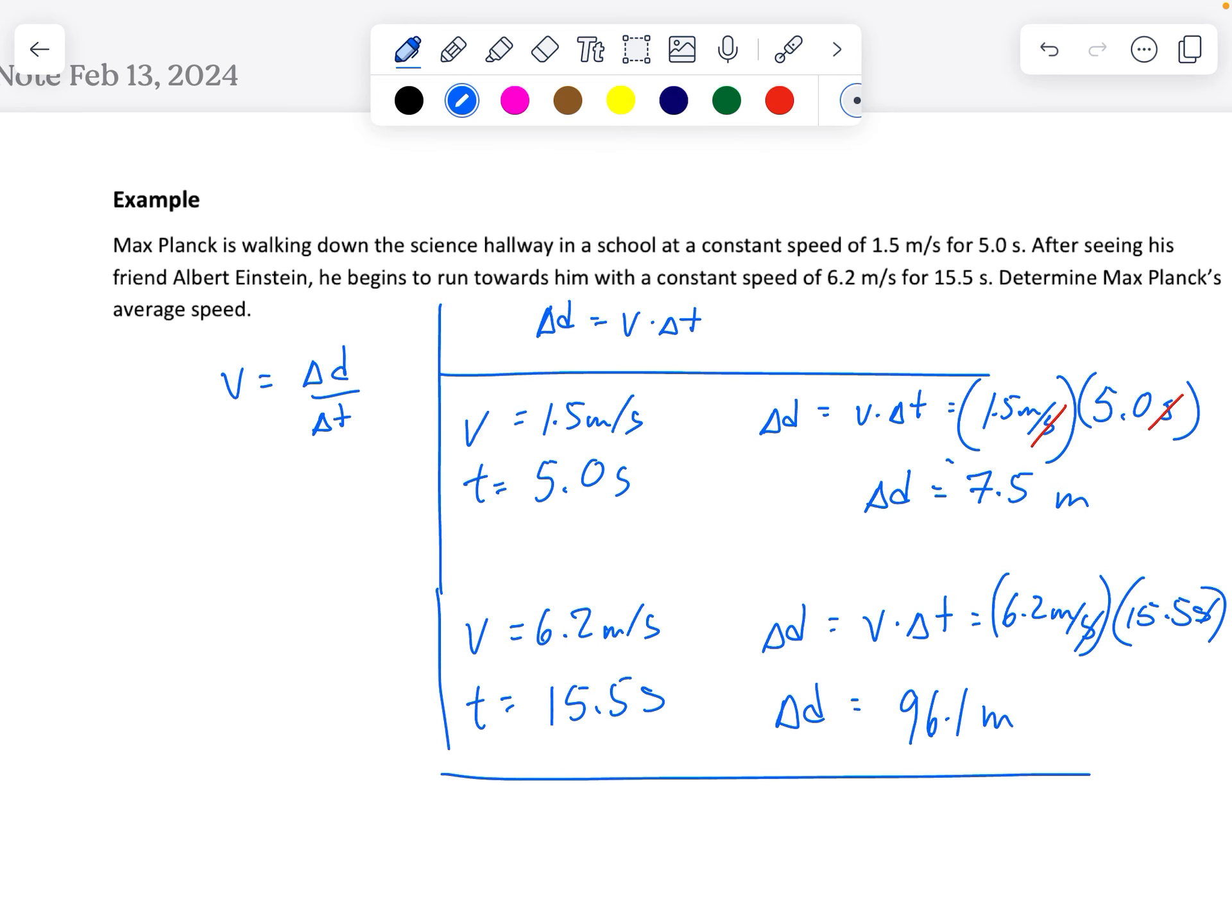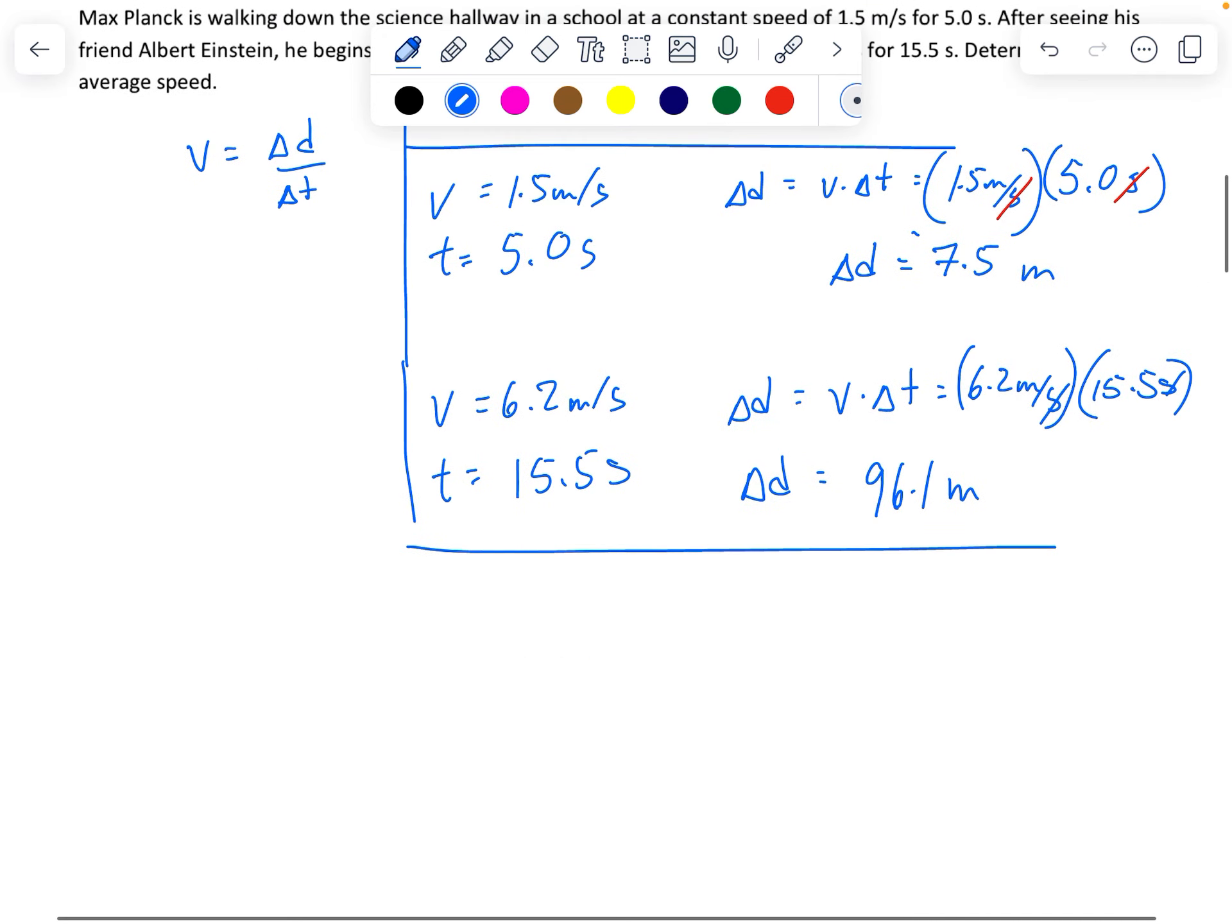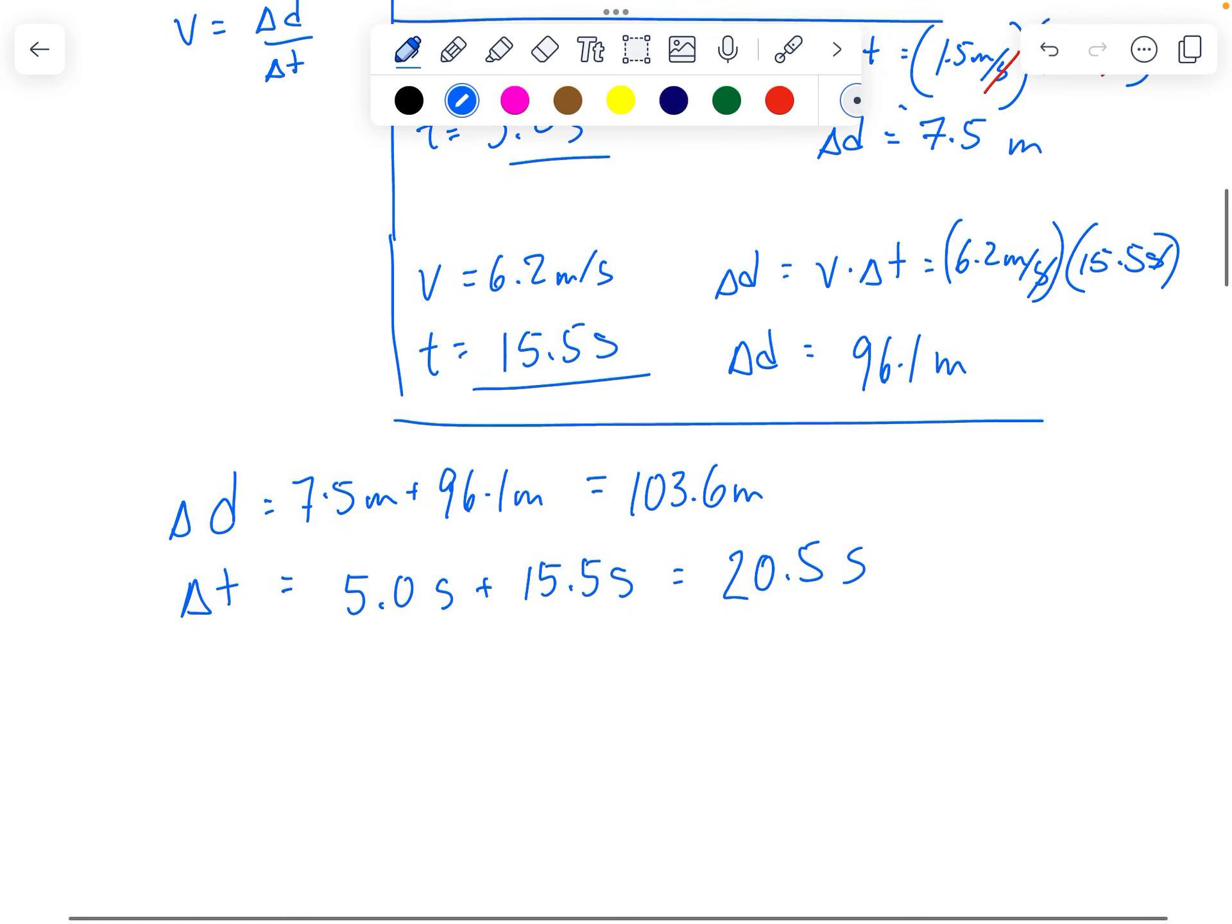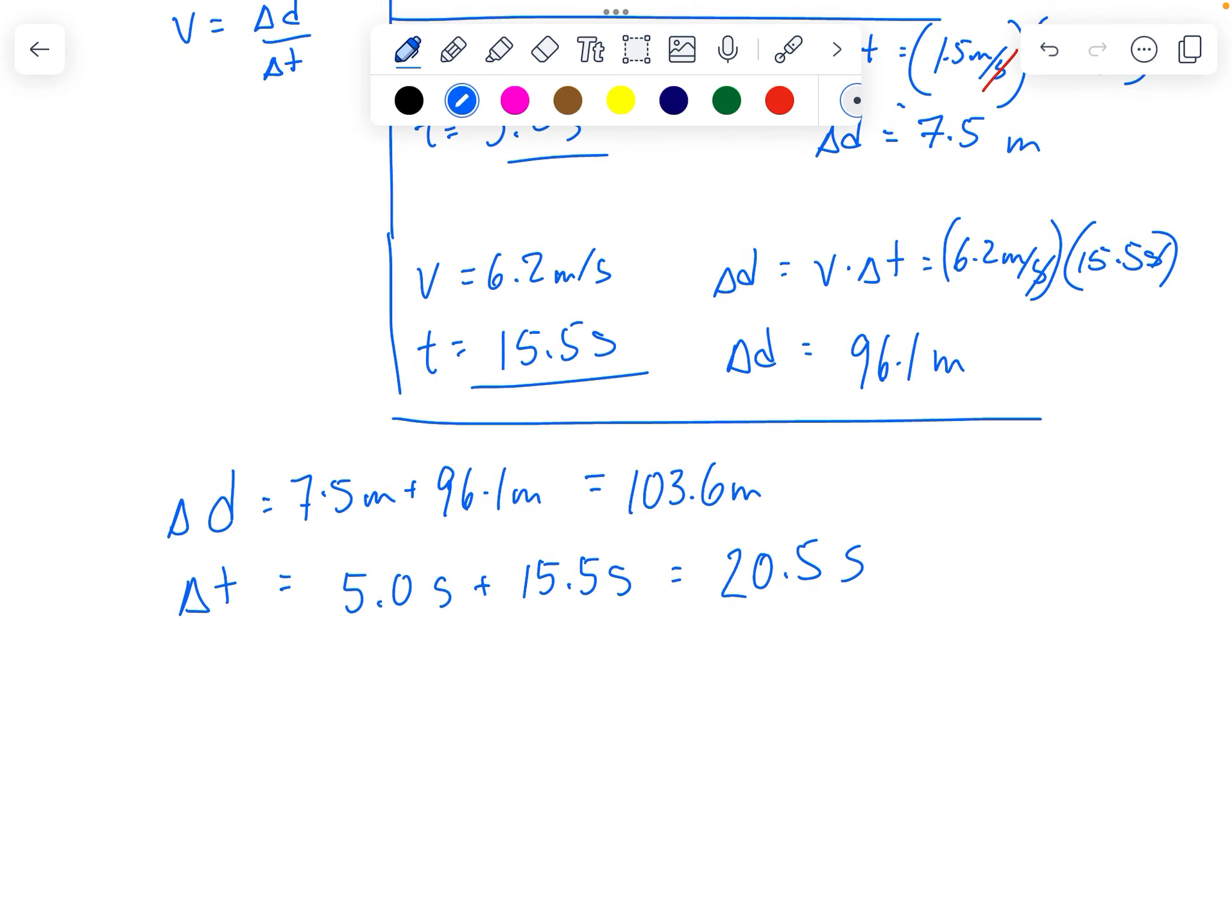And so this is the total distance. The change in total distance is going to be 7.5 meters and 96.1 meters. So the total distance traveled is 103.6 meters. And the total time it takes to do that is this 5 seconds and then the 15.5 seconds. So 5.0 seconds plus 15.5 seconds is going to give us 20.5 seconds. So that's the total distance and the total change in time.